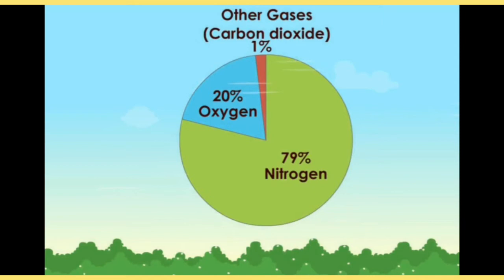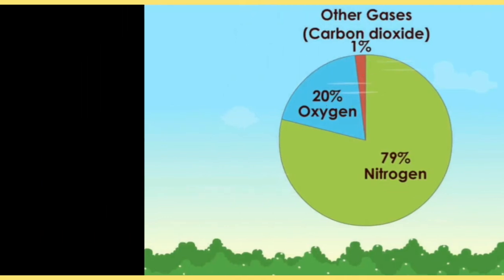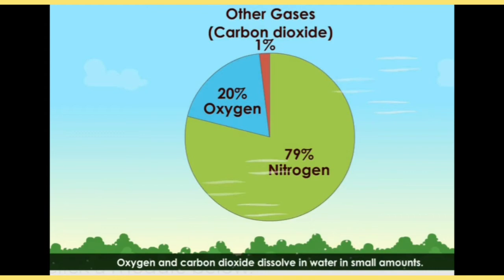If we talk about gases — in our environment there is nitrogen, oxygen, carbon dioxide, and other gases. Oxygen and carbon dioxide dissolve in water in small amounts. This is important because aquatic animals and plants which are alive depend on the oxygen dissolved in water.